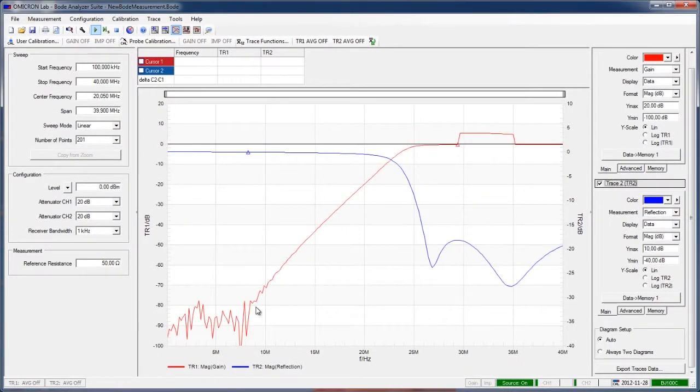After we have done this, we immediately get a nice curve for our high pass filter that represents the scattered parameter S21.